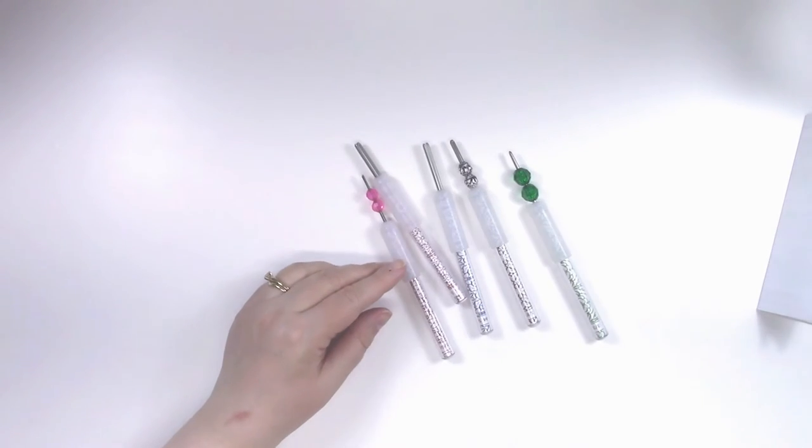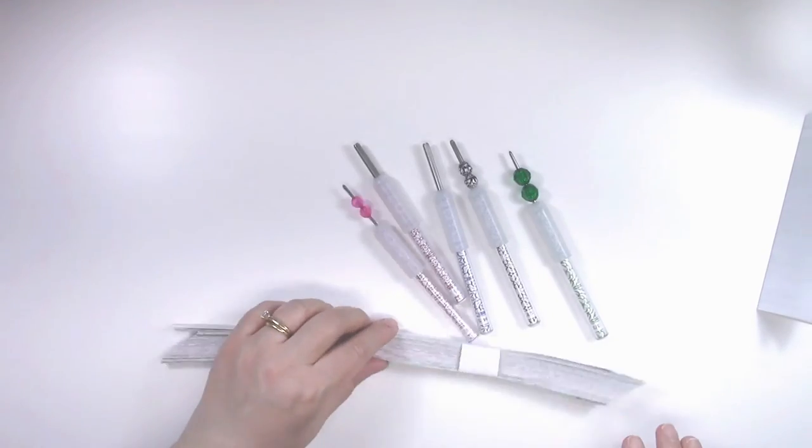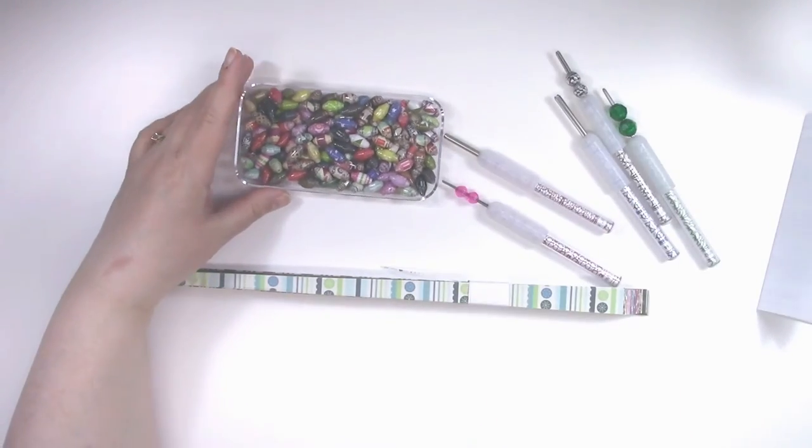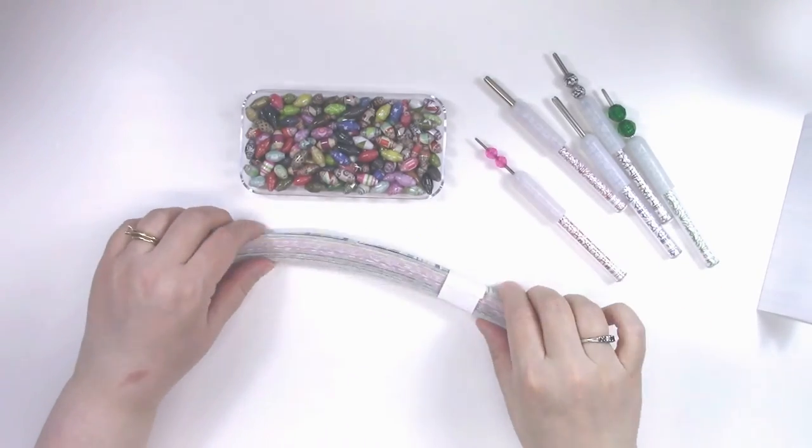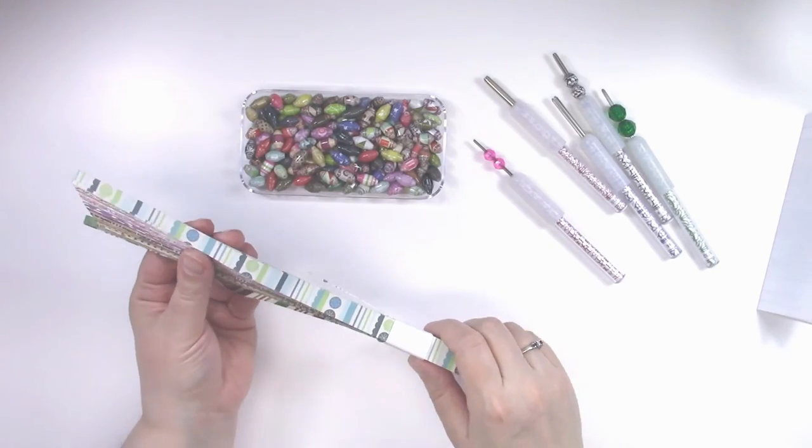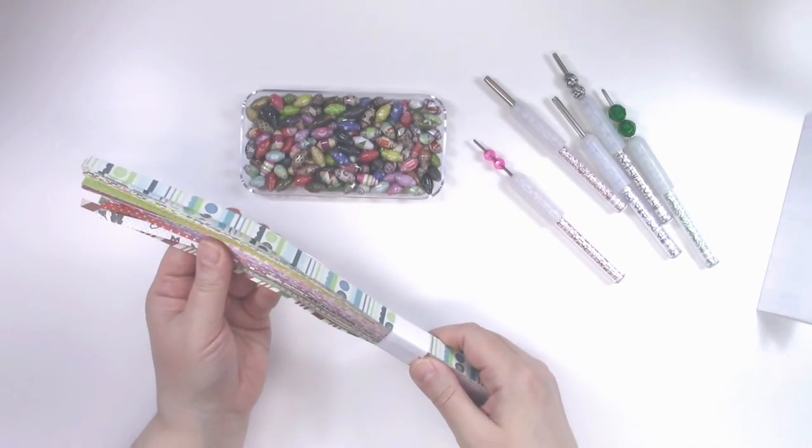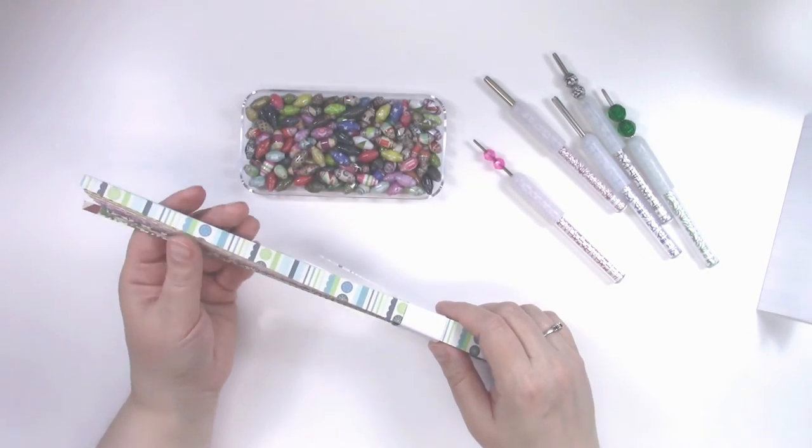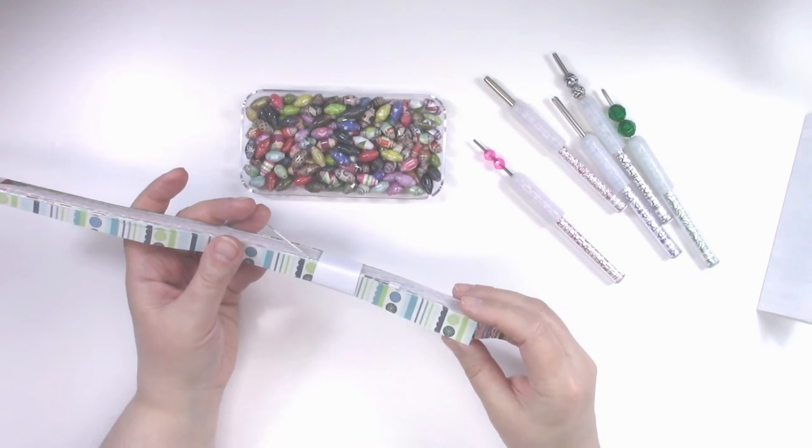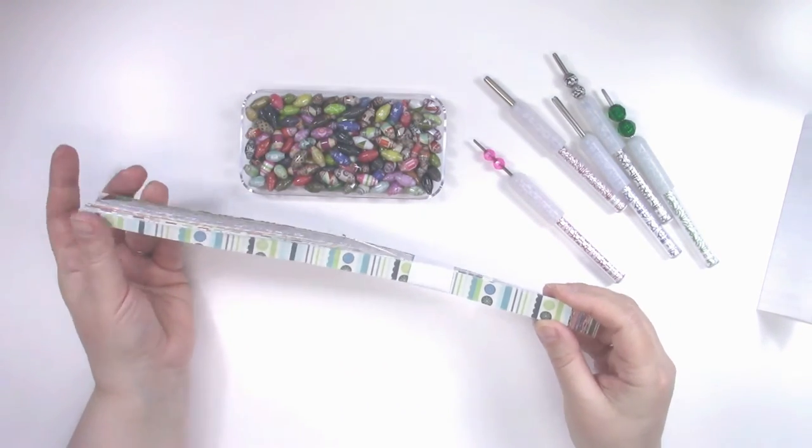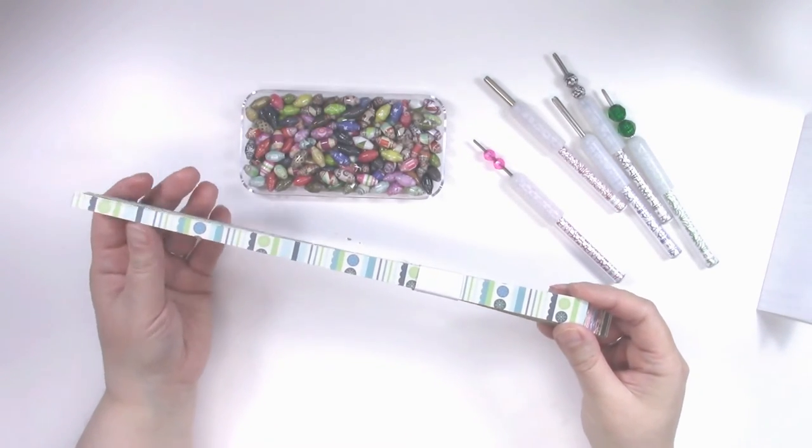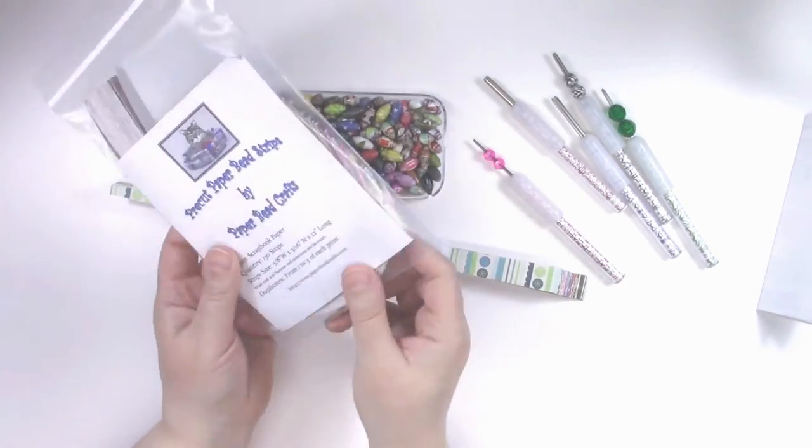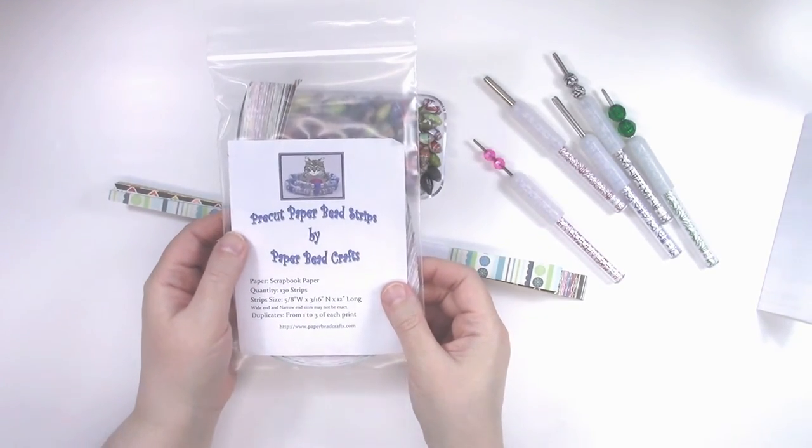Let me demonstrate one for you. I've got some pre-cut strips here. These pre-cut strips are going to be available on my Etsy shop in the near future. They're not available yet. I still have to take pictures of them and get them up. Basically, it's 130 strips in a bundle and up to three copies or three pieces of the same print. It was a whole bundle, a whole pad that I decided to cut up into strips. They're about five eighths of an inch at one end and about an eighth inch at the other end.